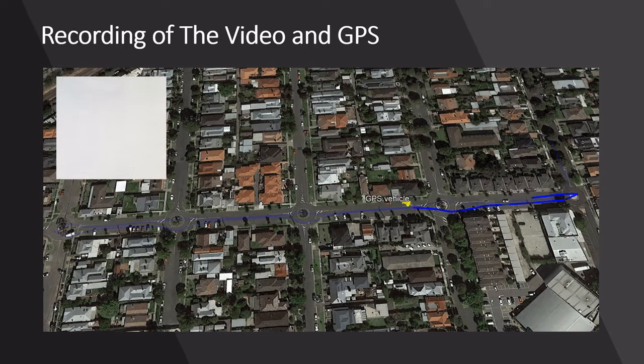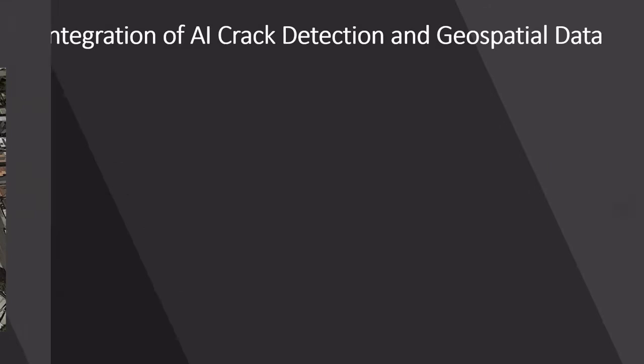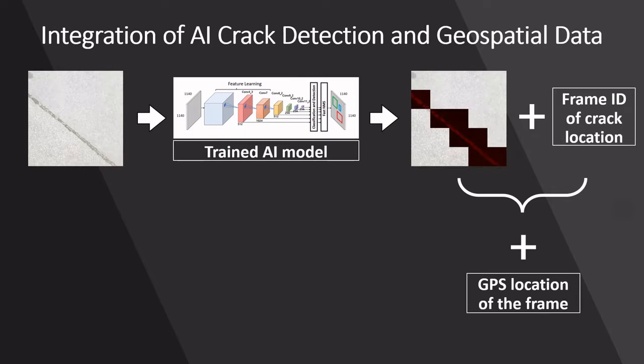For a better understanding, the GPS reading of the vehicle taken during the video recording can be imported into Google Maps. Images detected by AI as road cracks can then be combined with geospatial data on Google Earth and used by the maintenance team.